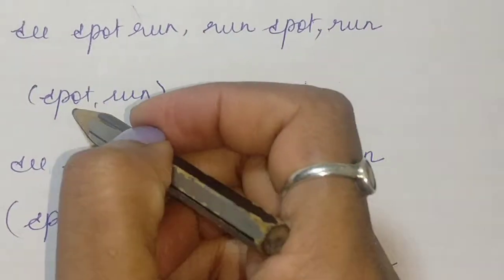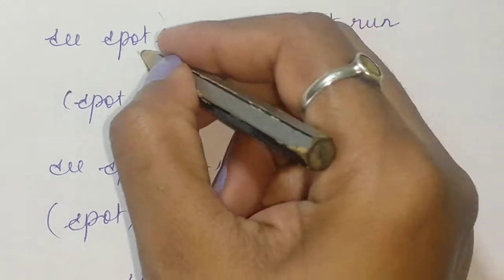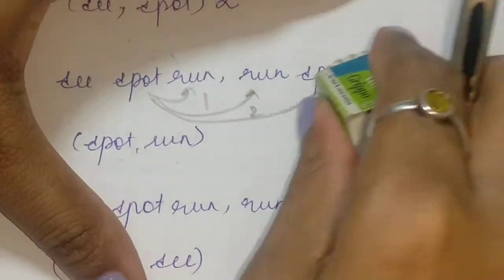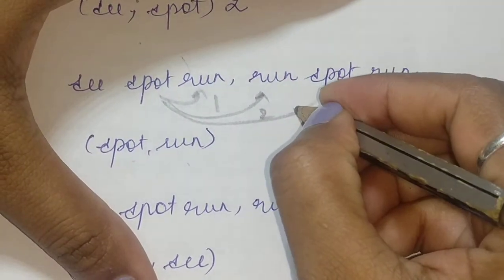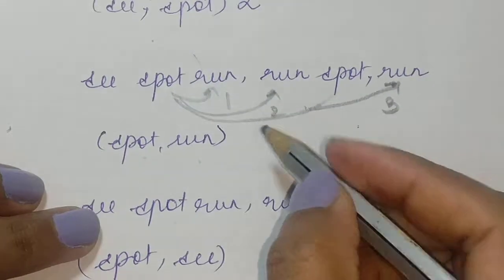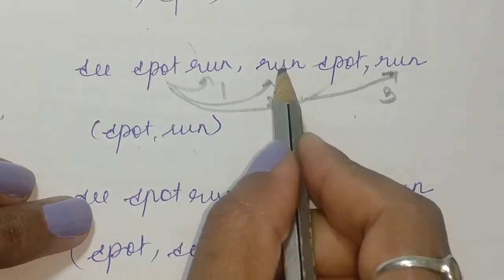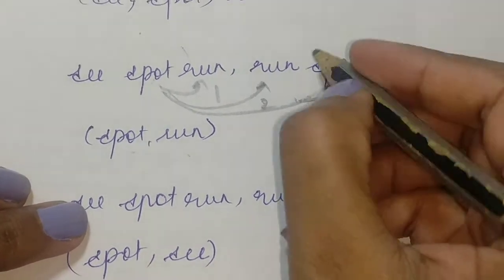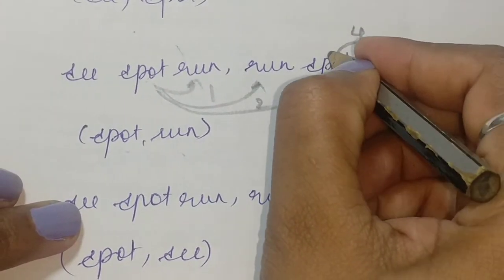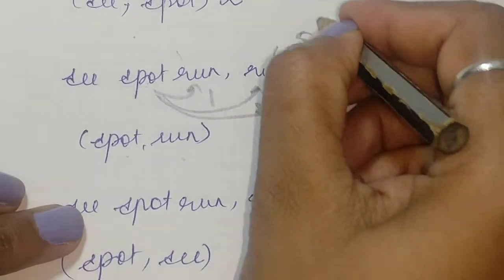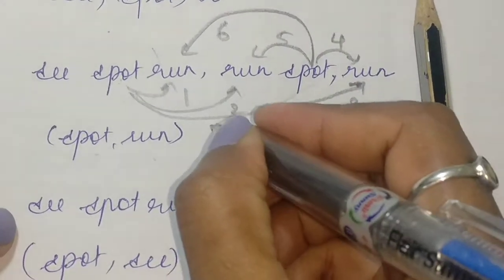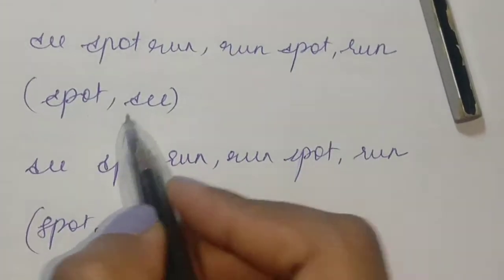Next, spot and run. There are two spots, so let me go through it carefully. Spot and run: first, second, third — that's the first spot done. Now the second spot: from this spot to this run is fourth, from this spot to this run is fifth, and from this spot to this run becomes six. So spot and run the value becomes six.